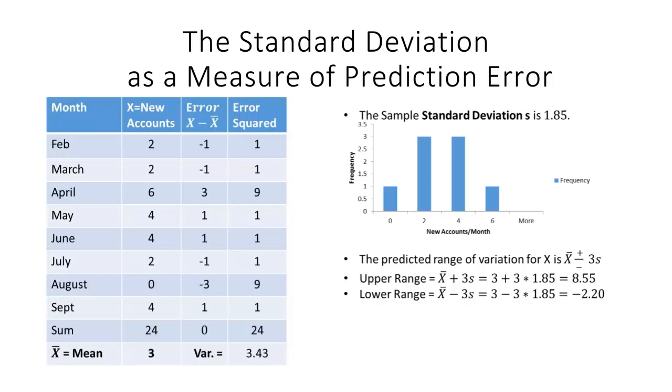The standard deviation has a really useful interpretation. If I add three standard deviations to the average, that gives me the predicted upper range of my data. In this case, we would predict that we would never see an observation above 8.55 or 9. If I subtract three standard deviations from the average, I get a predicted lower range for my observations. In this case, I get a negative number, so it's telling me something that I already know. I'm not going to get a negative number of new accounts. Maybe in other context, x might represent the next net change in the number of accounts, new ones minus lost accounts, and the negative would make sense.